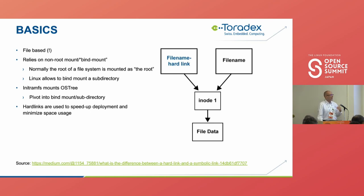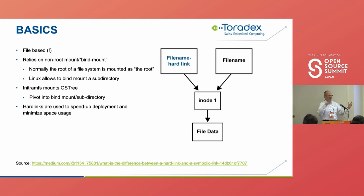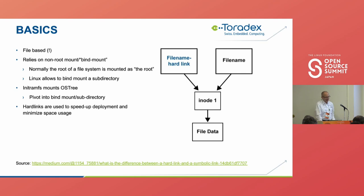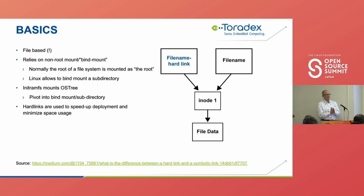Normally the root of your file system is mounted as slash. In an OSTree-based system, you actually bind mount slash to somewhere else in the actual file system — it's a bit of an inception-based indirection that's a little awkward to wrap your head around, but once you've started playing with it, it's not that complicated. To do all this processing, it does require an initramfs. The logic in the initramfs is what does all the manipulation of the bootable file system trees and sets up that bind mount for the root file system.